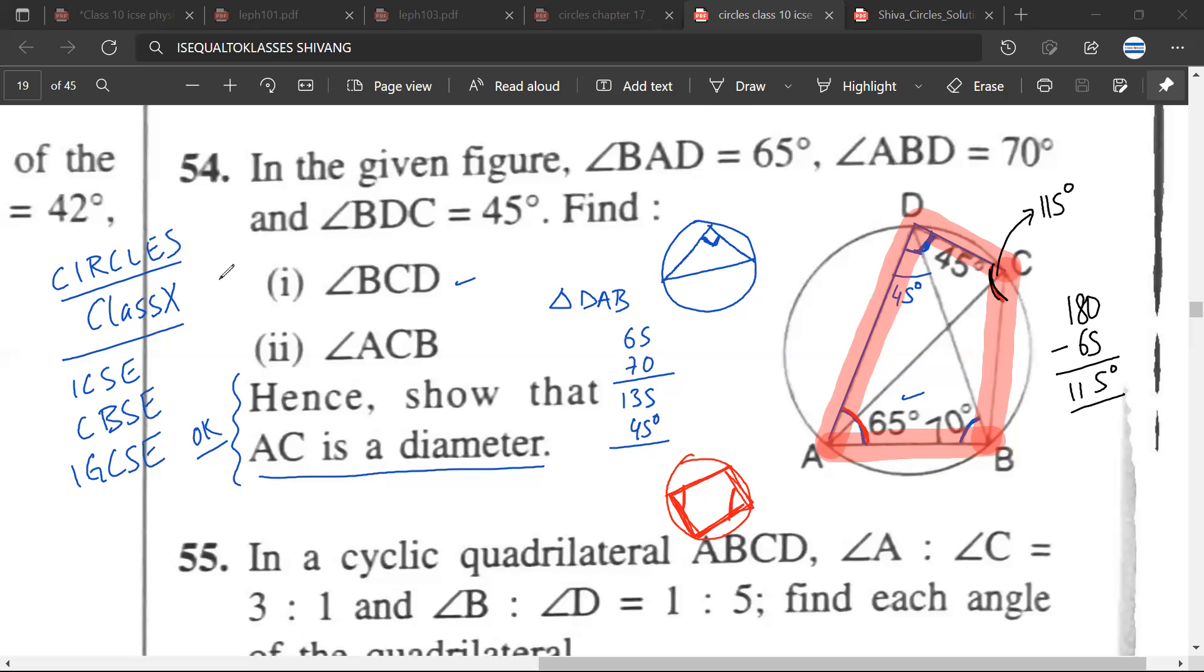What next? Sir, angle ACB. And how we will find ACB? So basically 115 minus 45.